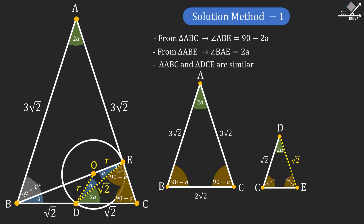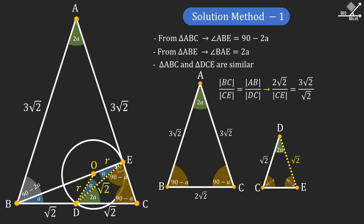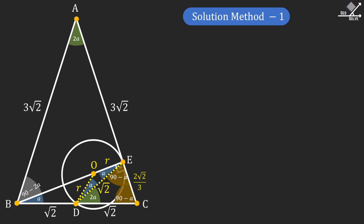Now we can see that triangle ABC and triangle DCE are similar. And from here we can write BC over CE equals AB over DC. Putting in the values we know, we will have 2 times square root of 2 over CE equals 3 times square root of 2 over square root of 2. And from here we can find CE as 2 times square root of 2 over 3. Now let's focus on triangle BEC: the sine of angle A equals 2 times square root of 2 over 3, all over 2 times square root of 2, which equals 1 over 3.